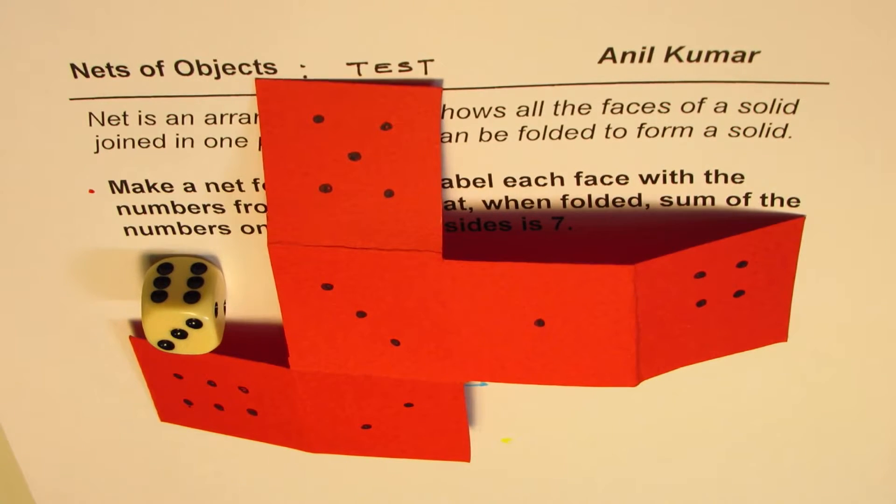That should give you a good understanding of nets as related to objects. Remember they are joined faces, and when folded they can form a solid. That's important. I'm Anil Kumar and I hope you enjoyed this journey of learning nets and how they form objects. Remember, joined pieces should form an object. If an object cannot be formed with that, then it is not a net.